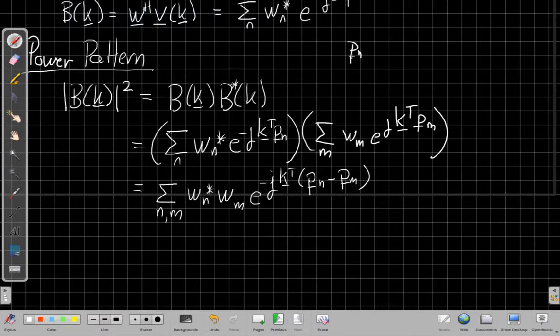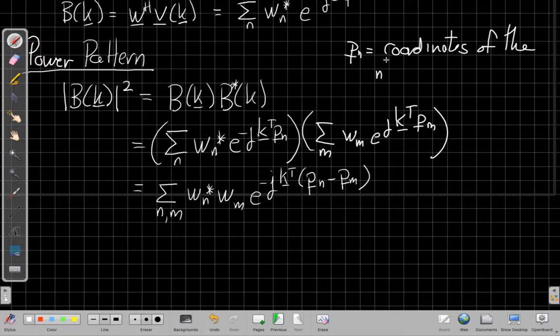And I should just remind ourselves, P sub n is the coordinates of the nth sensor. So that's the vector, a three-dimensional vector that tells me where to find the nth sensor in Cartesian space. That's the nominal result I'm supposedly looking for.